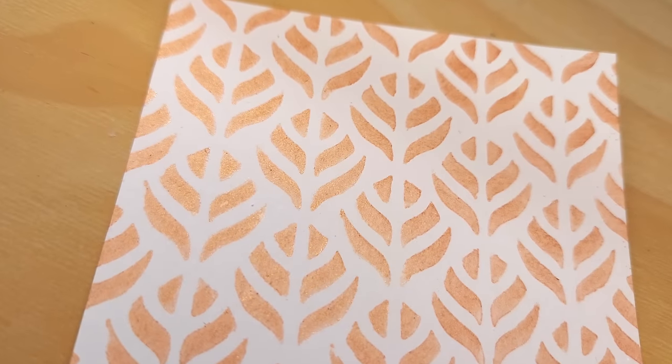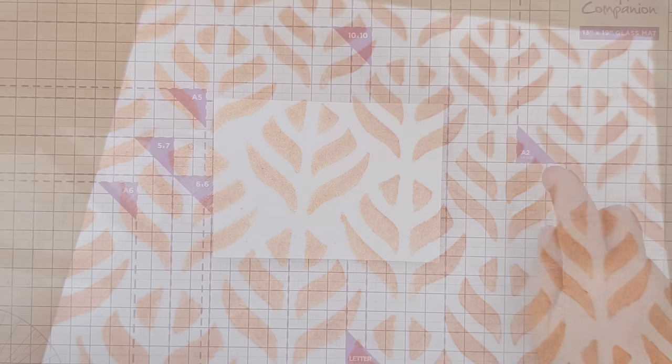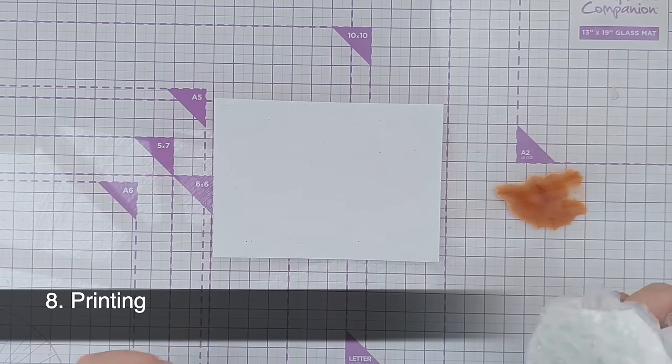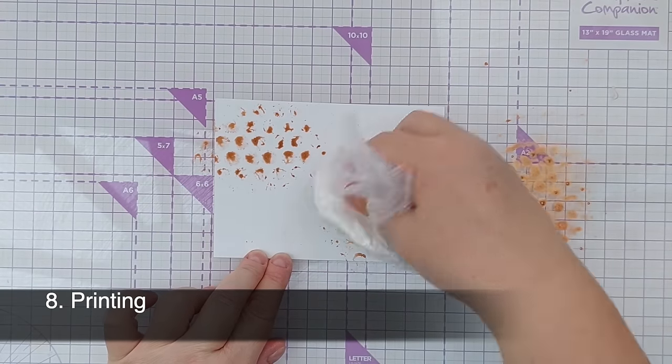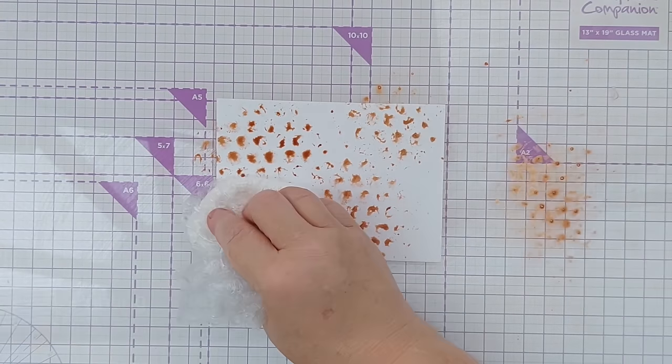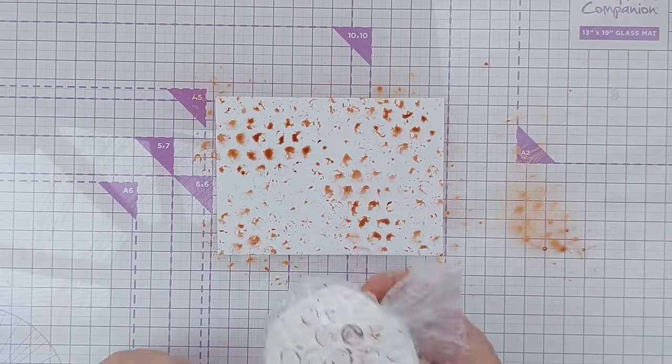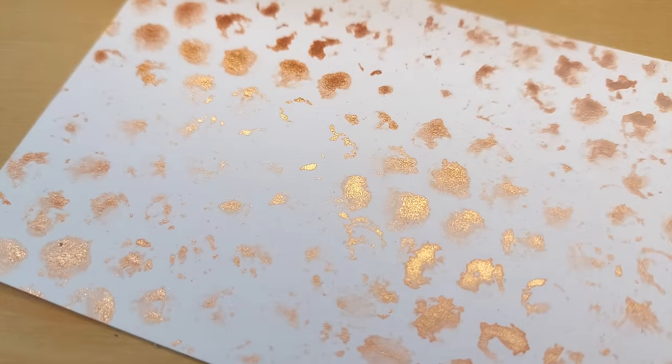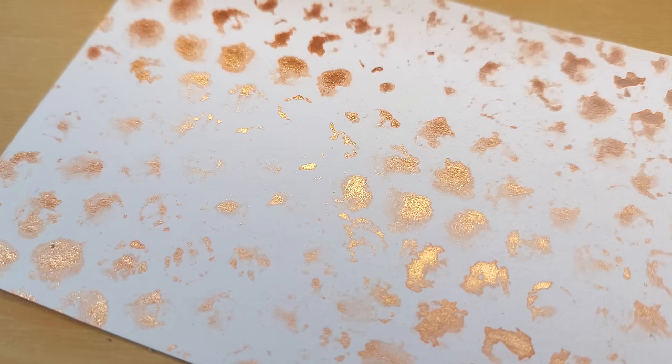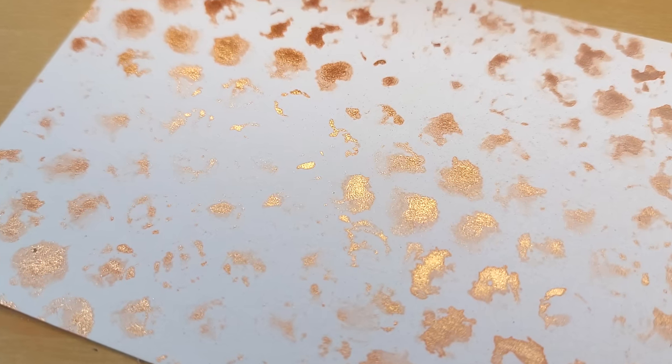Technique number eight is printing. For this I'm using my bubble wrap smusher and printing with a bubble wrap pattern. So I spritzed some spray onto my palette, picked it up with my bubble wrap and then printed it down onto my paper. This gives a lovely effect. You can print with anything you want, so have a rummage around your house, your craft room, find some objects, dip them in some shimmer spray and print with them on some card.